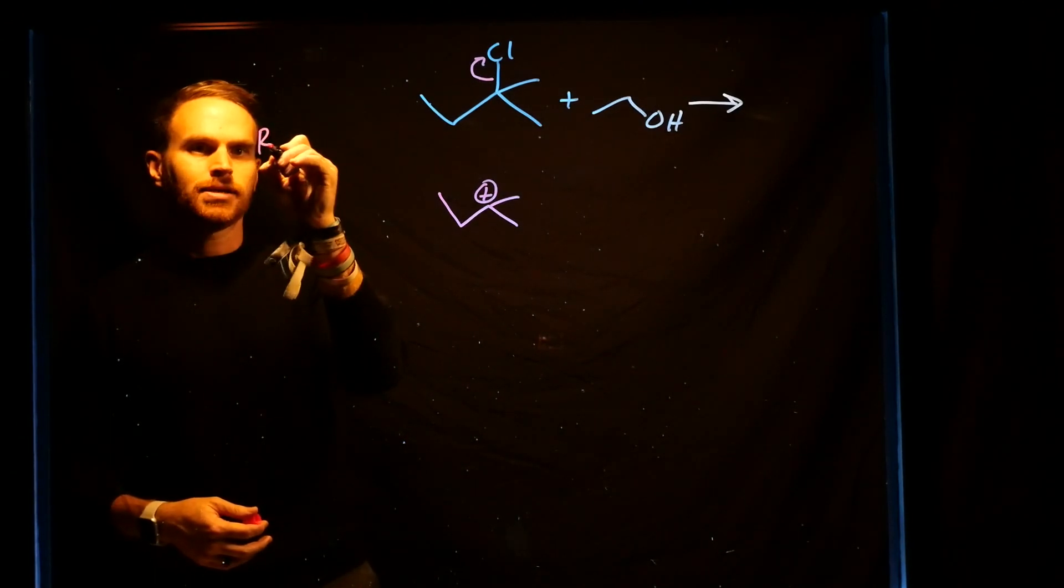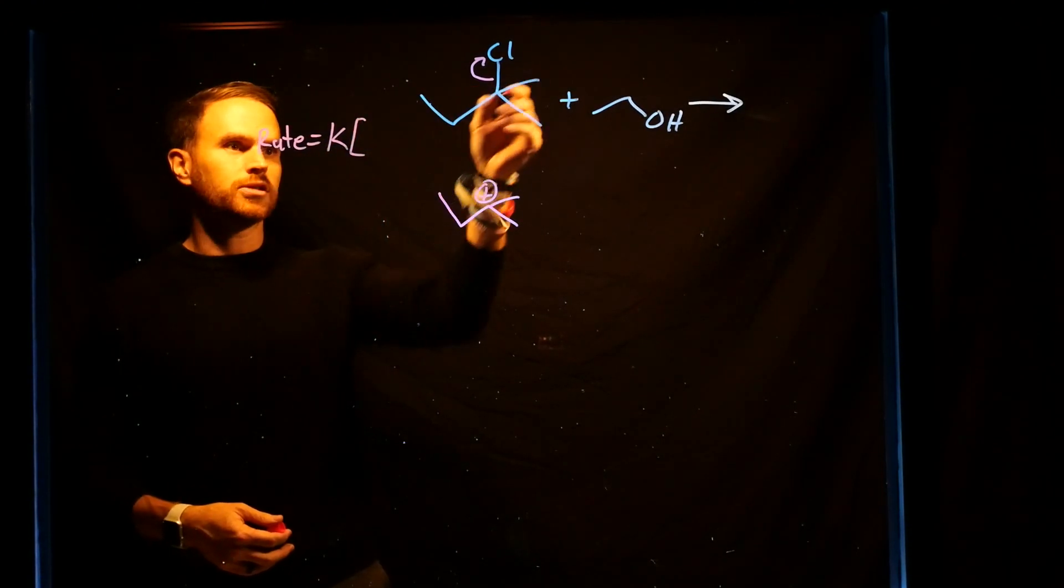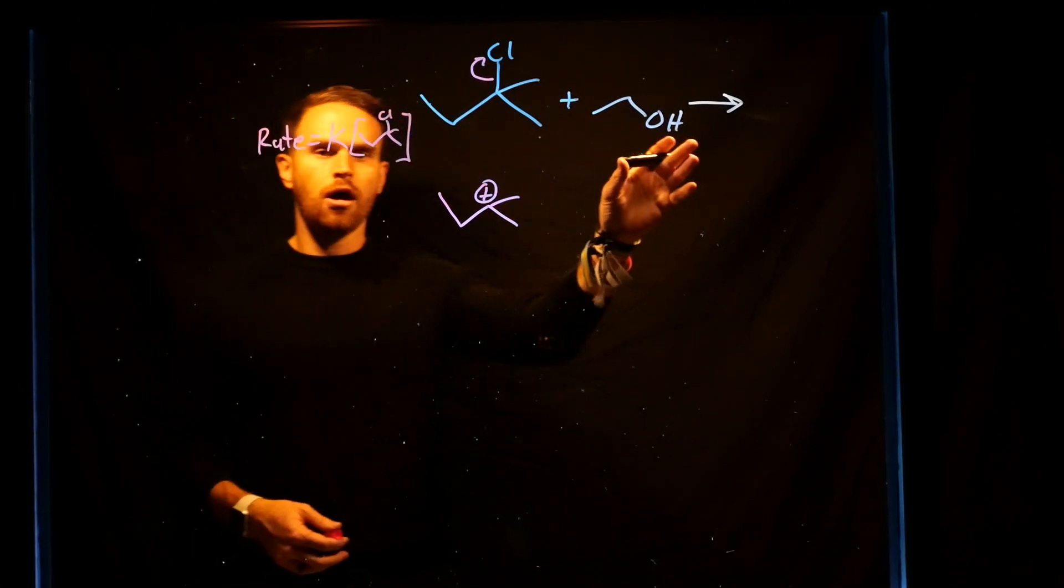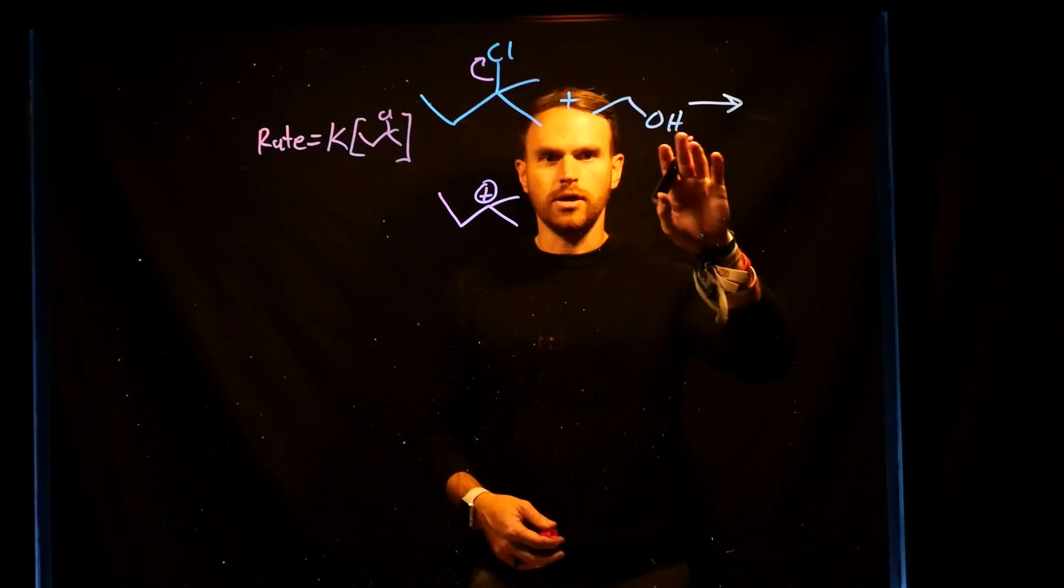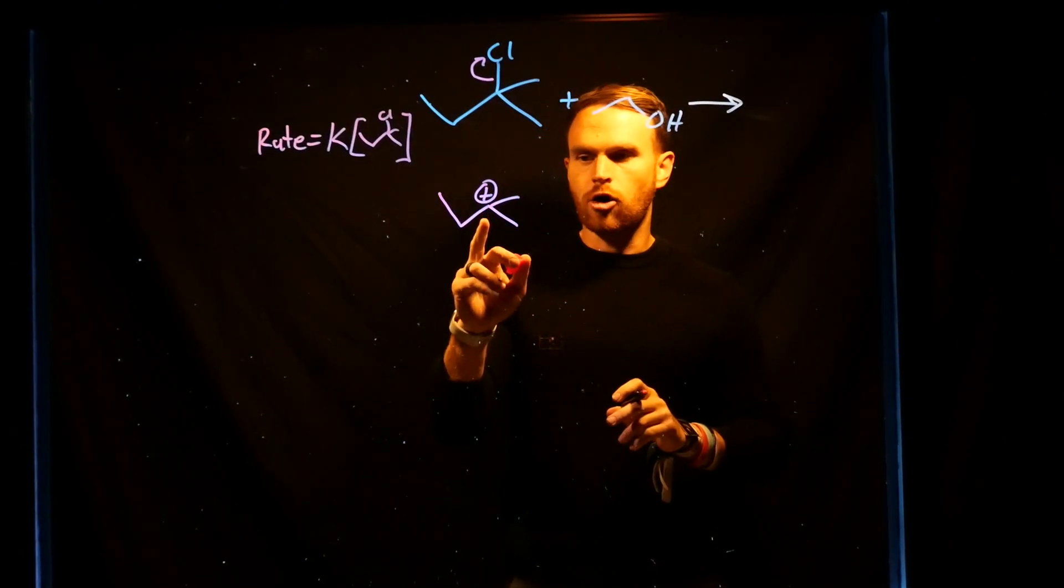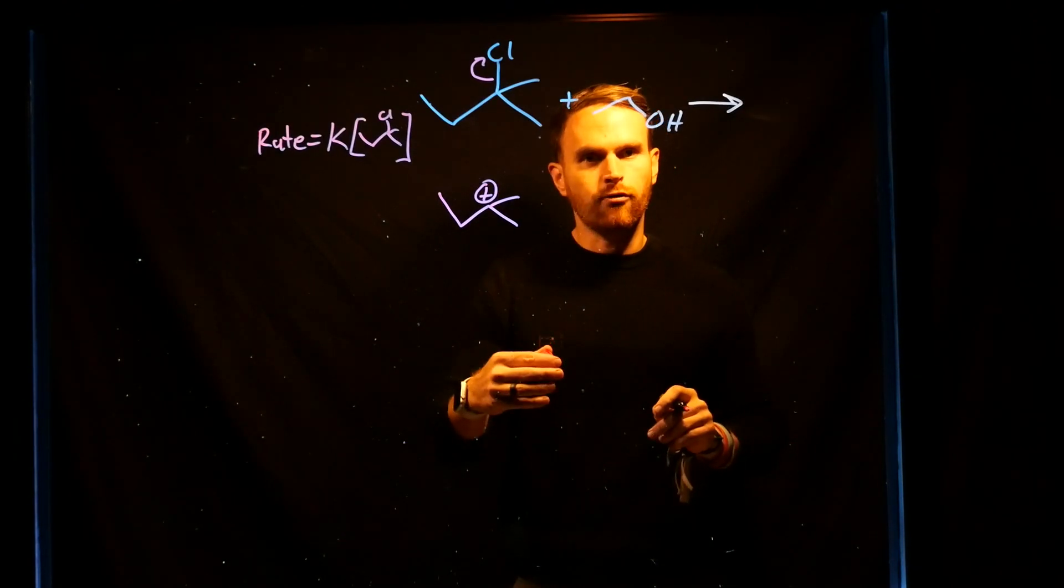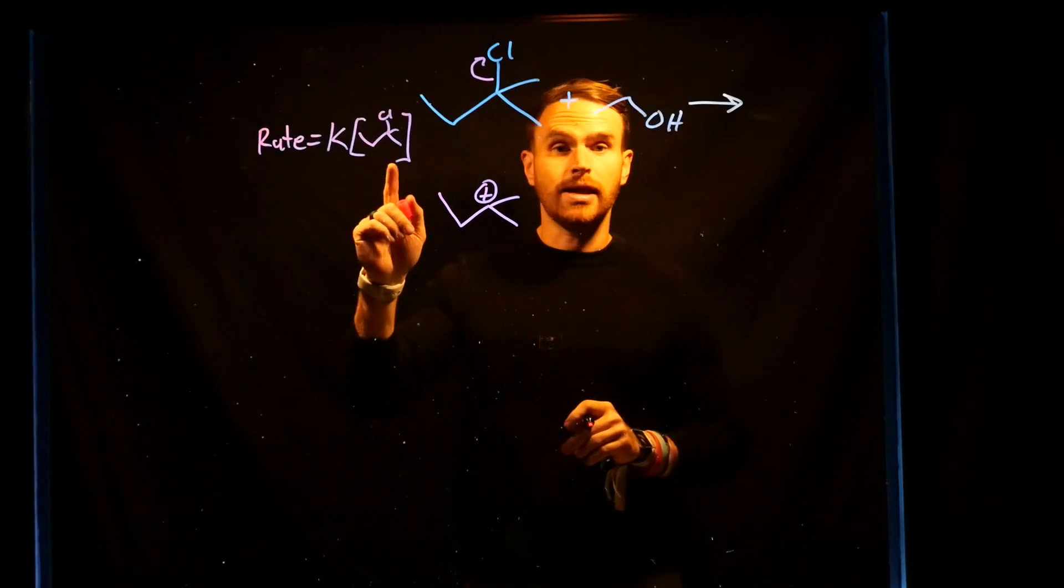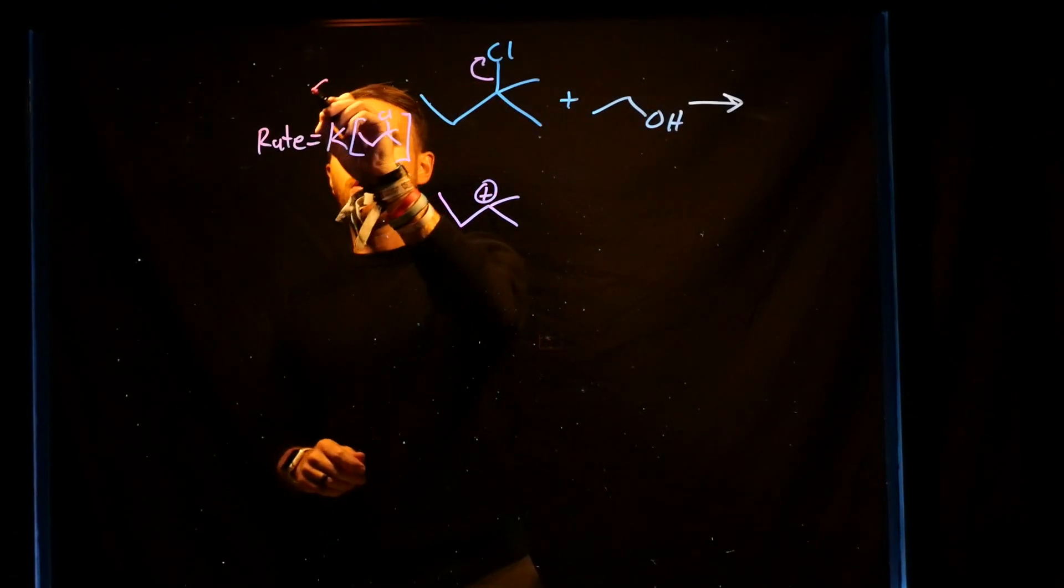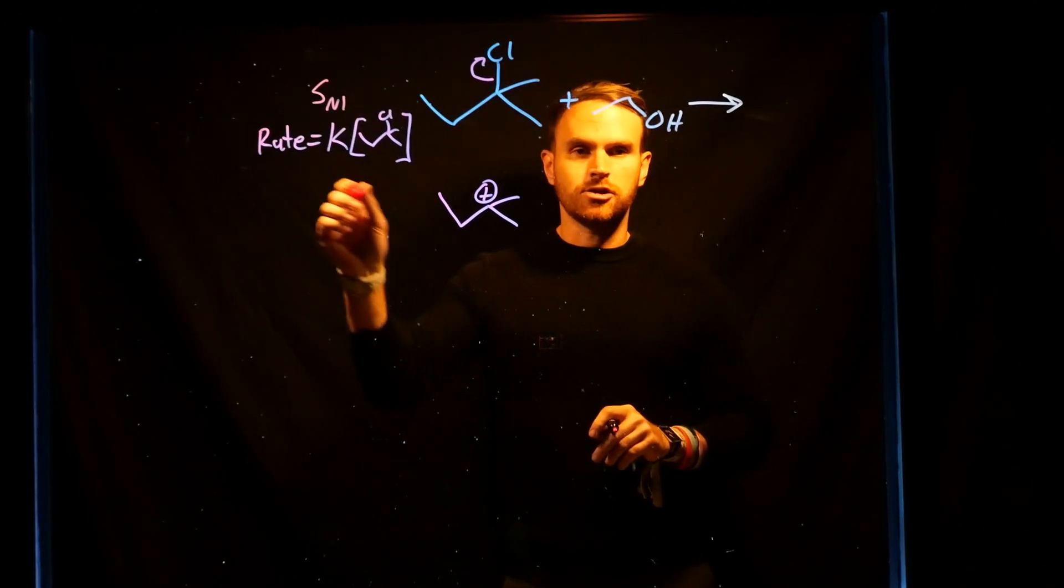Therefore, if we were to write the rate for this, it would be equal to K times the concentration of our starting material. And it would not be dependent on anything having to do with the nucleophile. That part is going to be very fast because once you've generated a carbocation, that is a very reactive species that's going to happen very fast. If you recall from previous chemistry courses, you would have learned that the slowest step is always the rate determining step. This is actually why we call it an SN1 reaction because only one of the species are responsible for the rate.